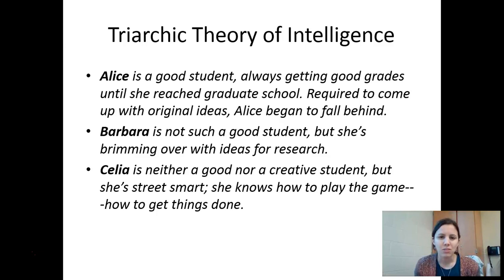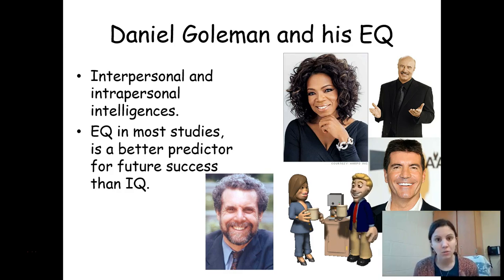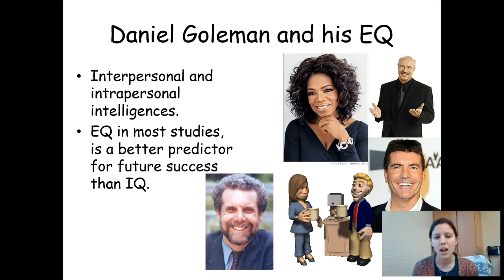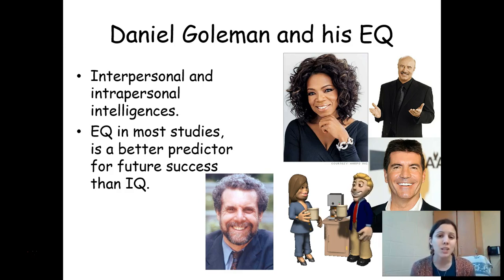Our fourth and final theory of intelligence is emotional intelligence. Daniel Goleman has really taken hold of this theory, and it looks at intelligence in a different way — not just cognitive ability, but your ability to relate to yourself and others. This is dominated by the interpersonal and intrapersonal intelligences of Howard Gardner. Goleman says this is far more important than IQ, because the correlation coefficient between your IQ score and success in life is just 0.02 — about as close to zero as you can get. What does predict success is your EQ, or how emotionally intelligent you are.